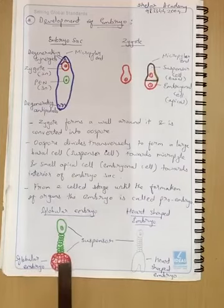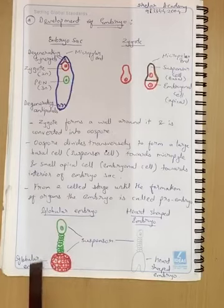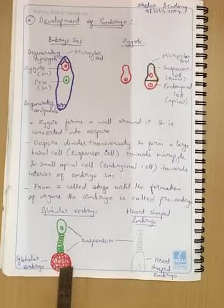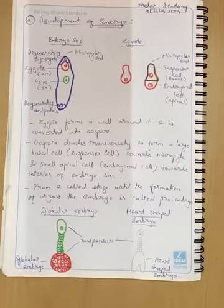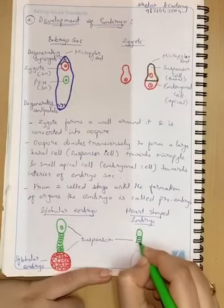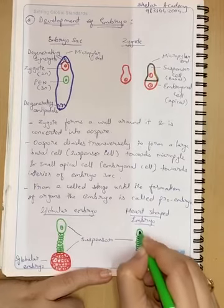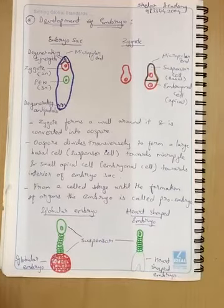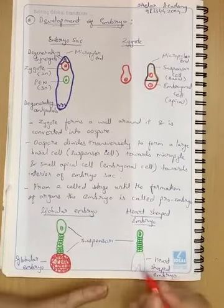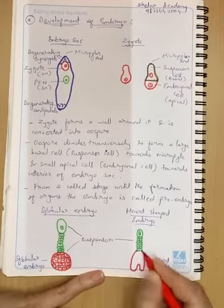The embryo will divide into a globular shape, so this will be called globular embryo. This will also divide but will modify the shape. Later on it will be converted into heart shape.